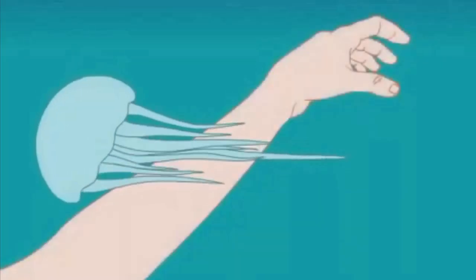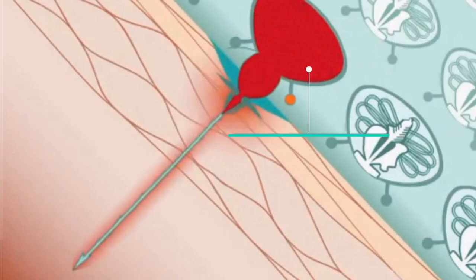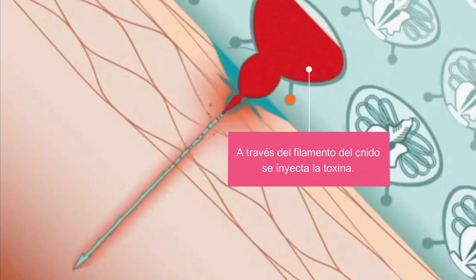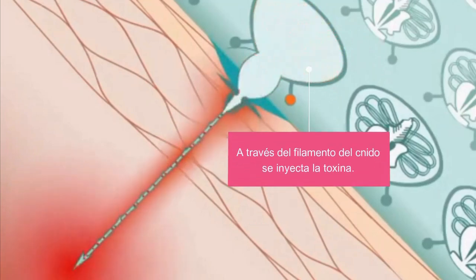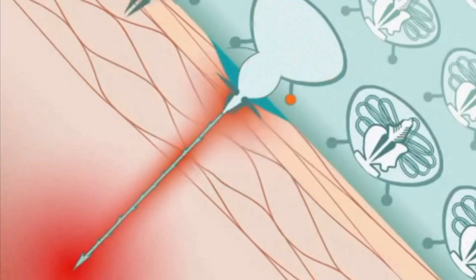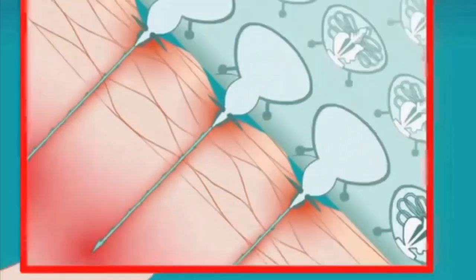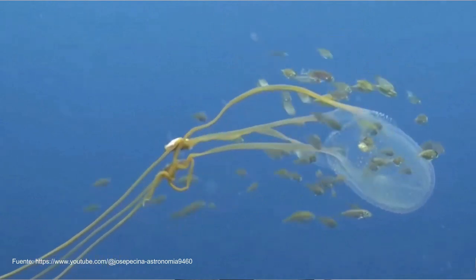Los nidos, a través de su filamento, inyectan toxinas que son sustancias químicas muy tóxicas. Son venenos capaces de paralizar presas grandes, incluso peces. Generalmente se trata de neurotoxinas que en algunos casos pueden ser mortales para humanos, como es el caso de la toxina de la cubomedusa avispa de mar.